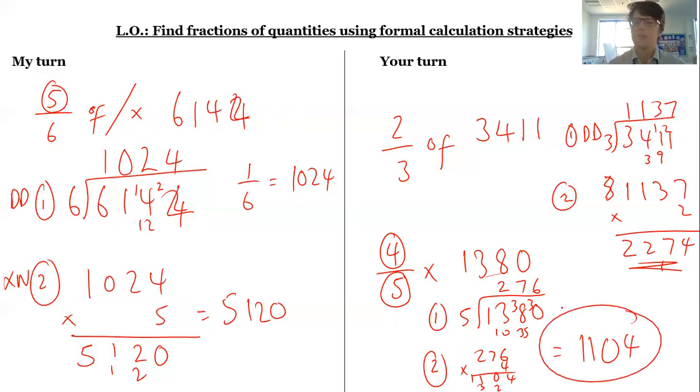Key thing to remember: divide by the denominator to split it up into that number of parts, then multiply by the numerator to find the number of parts you're looking for.